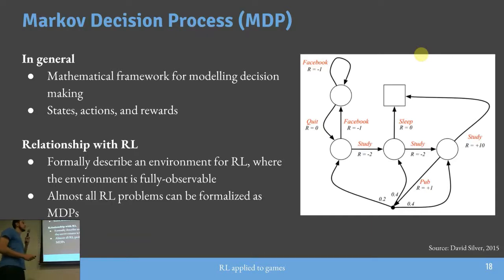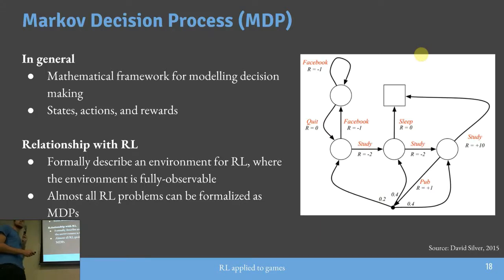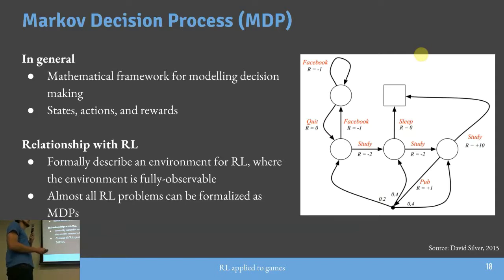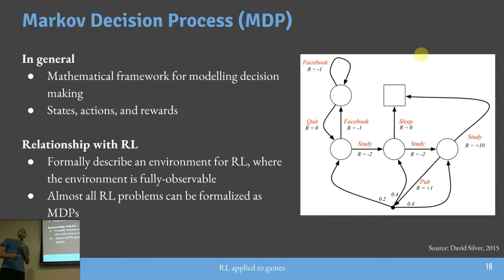No exemplo do MDP: eu estou num estado, posso ou estudar ou ir para o Facebook. Se for para o Facebook, posso ficar lá muito tempo até desistir. Posso continuar estudando e chegar num momento onde há probabilidade de ir para um pub ou estudar — se for ao pub, posso voltar ao primeiro estado. Essa cadeia que define quais estados transitam para quais e qual é a recompensa é o que o MDP modela. Problemas como robótica geralmente têm MDPs parcialmente observáveis, onde não se consegue enxergar todo o ambiente.